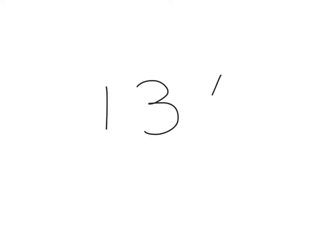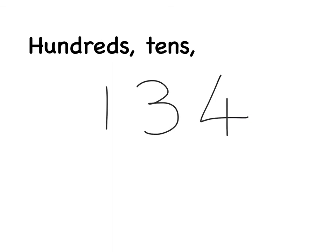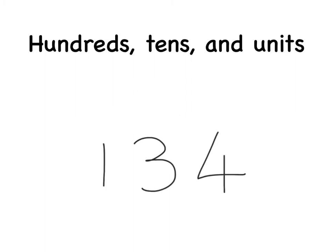This time, let's try a number in the hundreds — we're going to go for 134. Last time we had 2 digits in our number, the 7 and the 2. This time we have 3 digits, so instead of just tens and units, this time we have hundreds, tens, and units. In 134, our 1 belongs in the hundreds column, our 3 belongs in the tens column, and our 4 belongs in the units column. So we have 100, 3 tens, and 4 units.